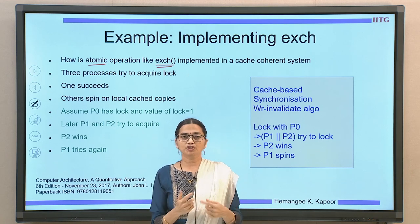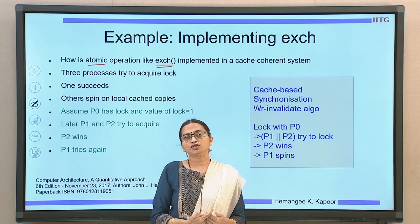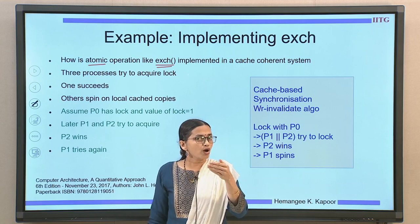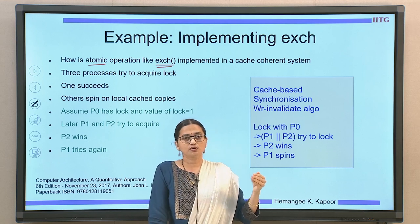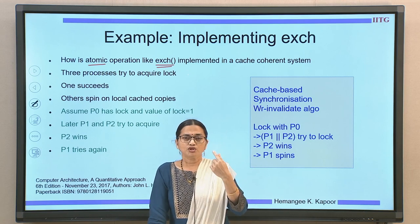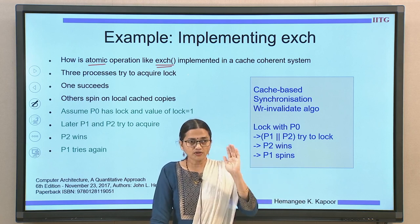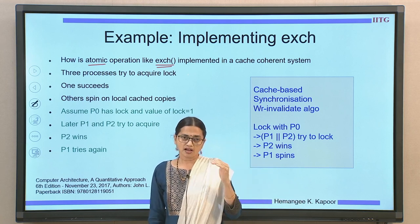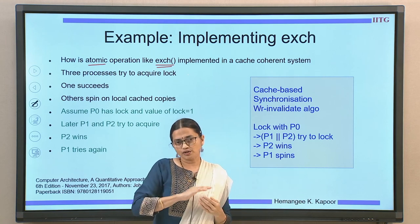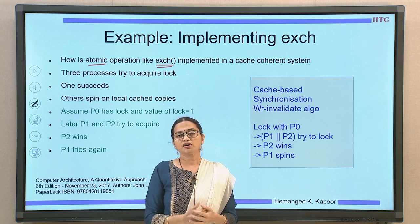P0 finishes its exchange (the write operation). After that, both P1 and P2 go back into their loop spinning on the local cached copy. This spinning is a read operation — since the block was invalidated by P0, they will reload the block and may find it equal to 1 or 0 depending on whether P0 has released the lock. This is the scenario we will discuss step by step.